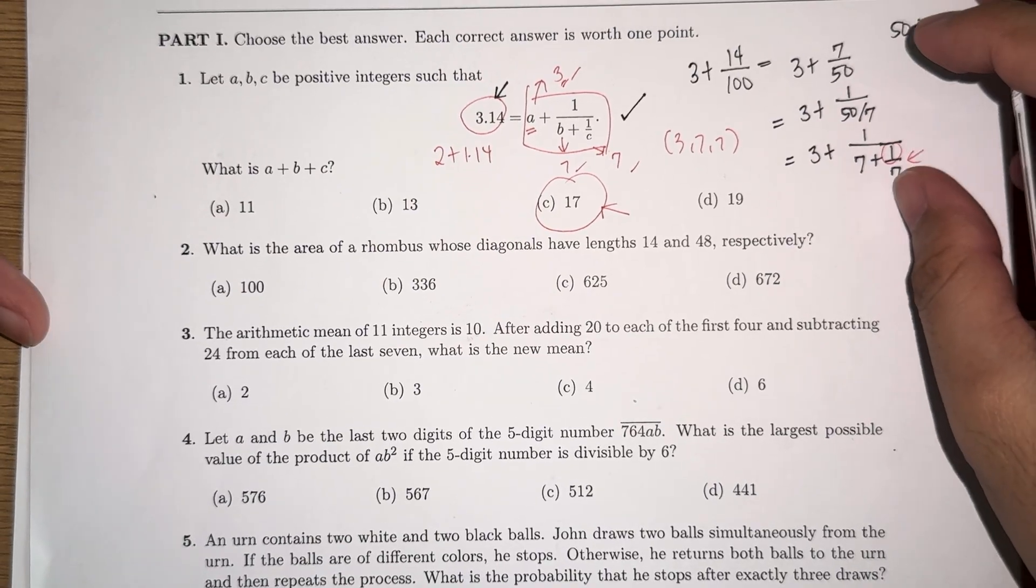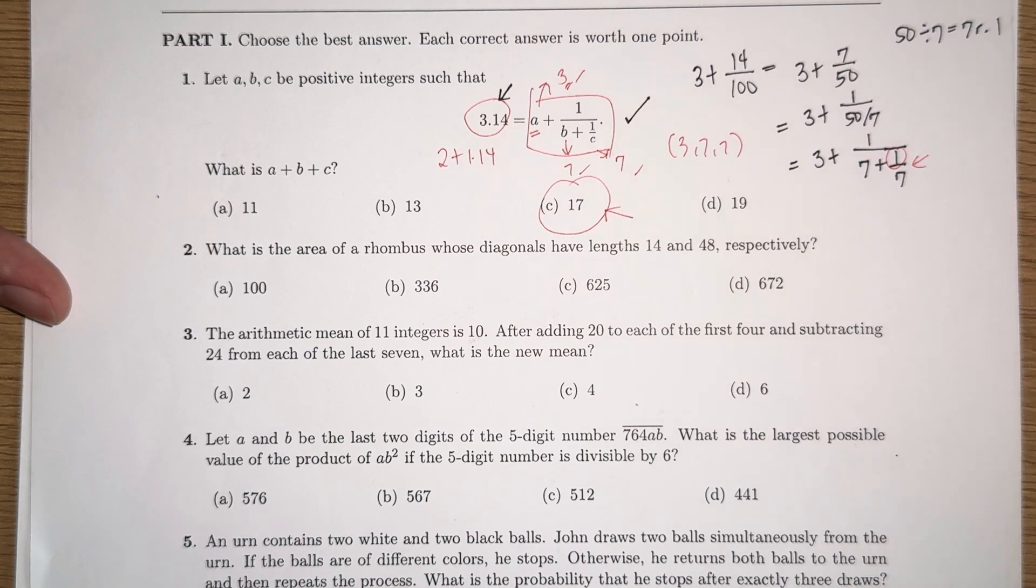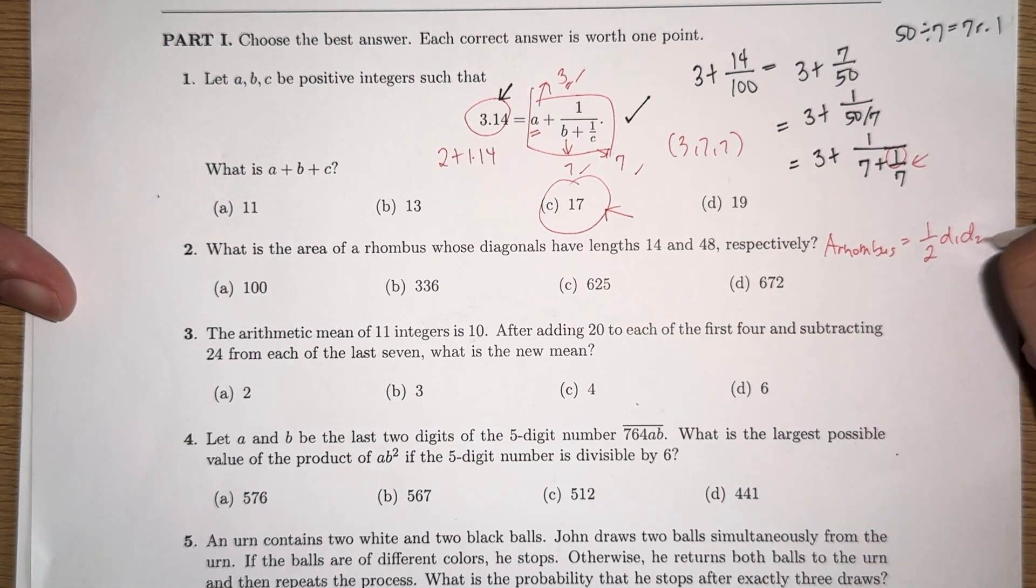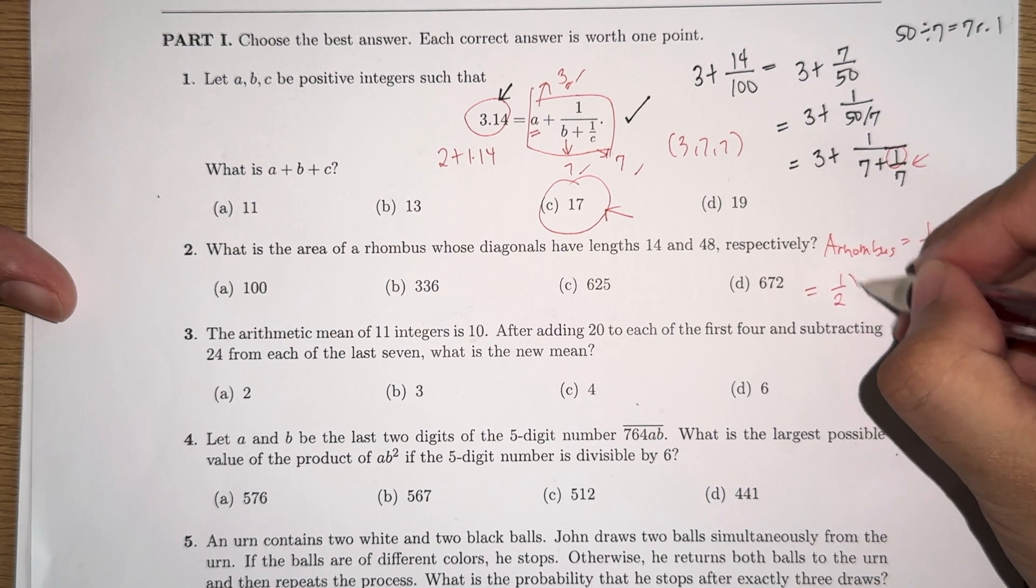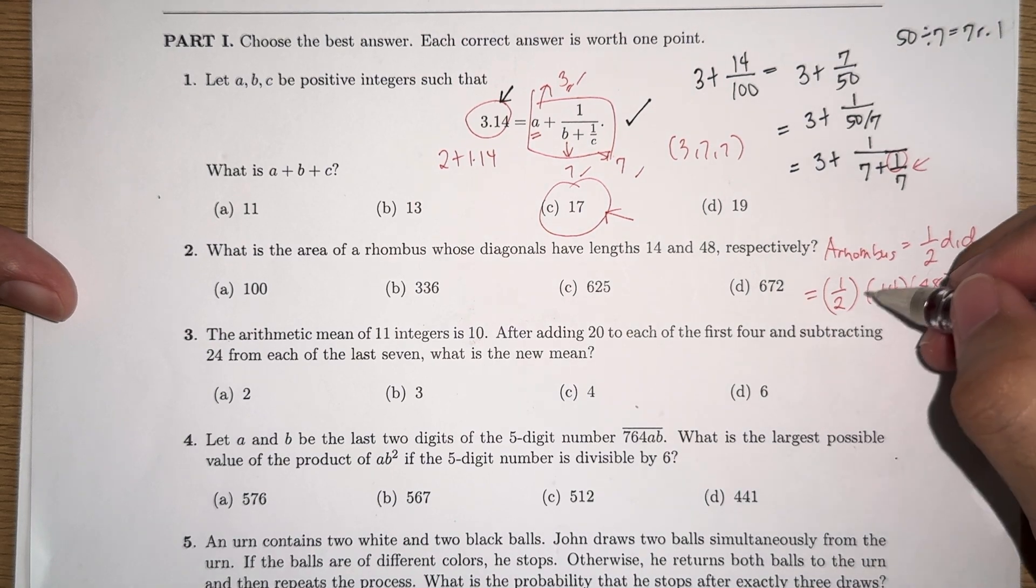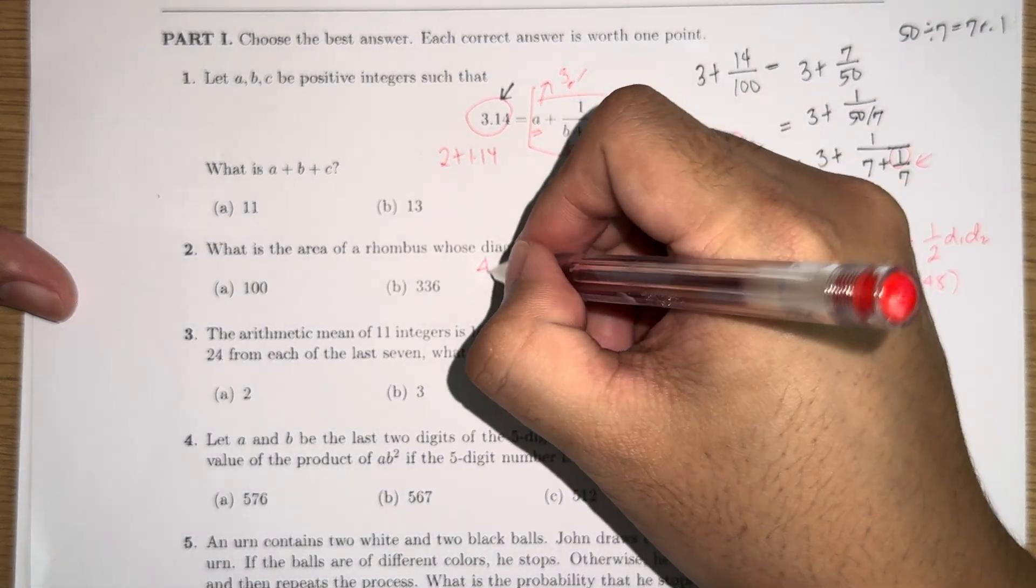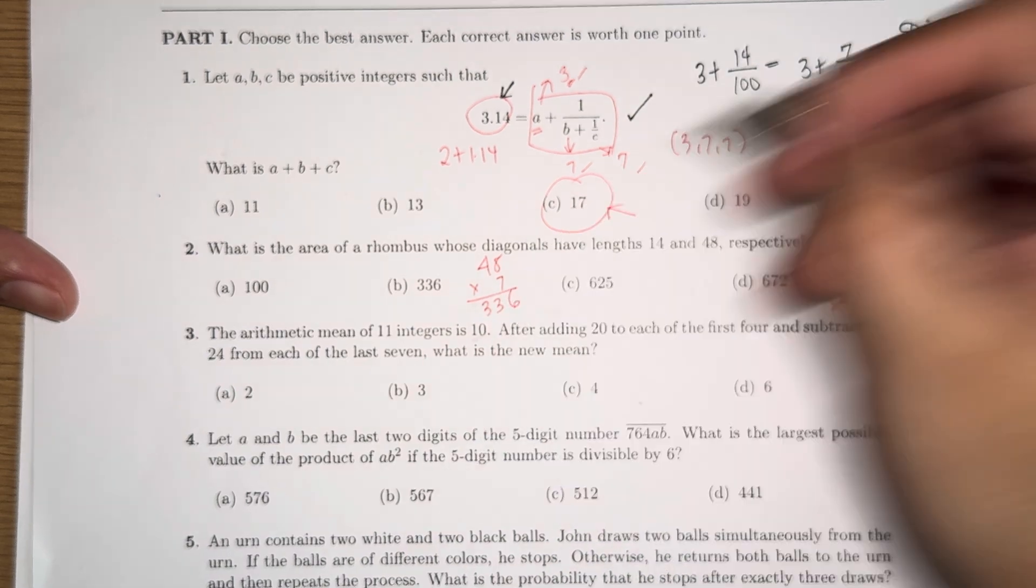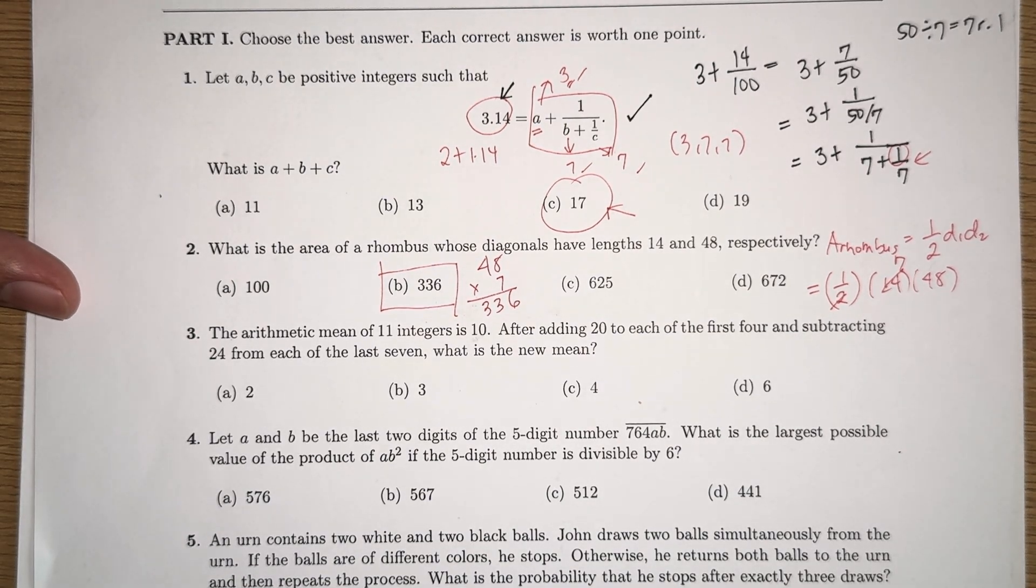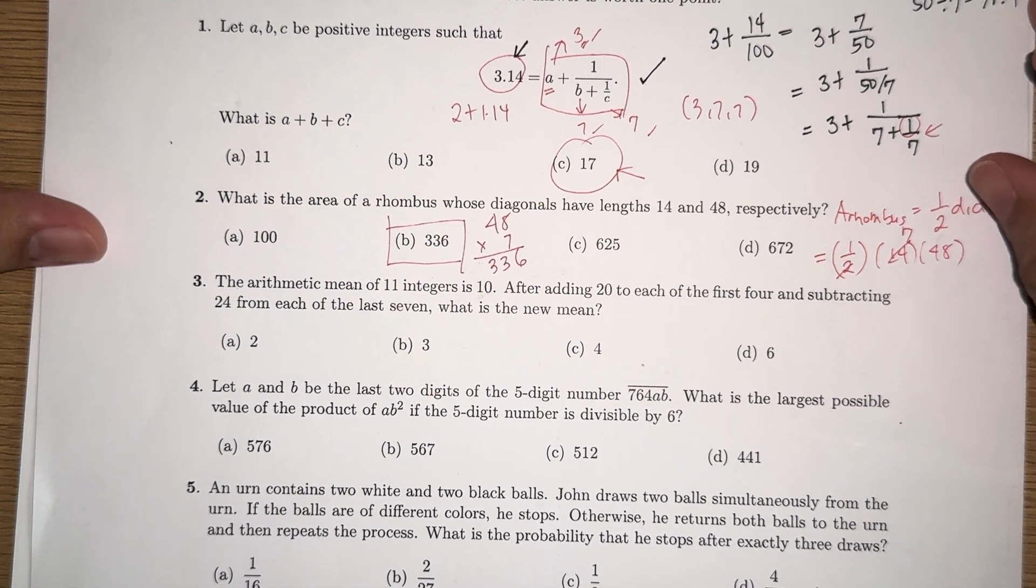Number 2, we are given the length of the diagonals of a rhombus as 14 and 48. So remember that the area of a rhombus is equal to 1 half times the product of the diagonals. So this is simply just equal to 1 half times 14 times 48. You cancel out a common factor of 2, this becomes 7. So the answer here is 48 times 7, which is 336. Therefore, the correct answer here is B, 336.